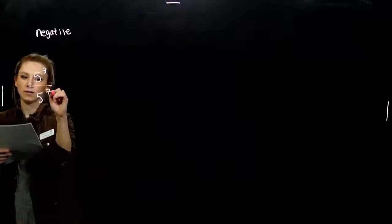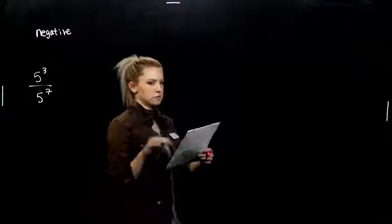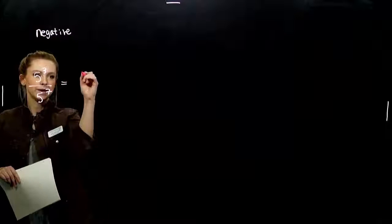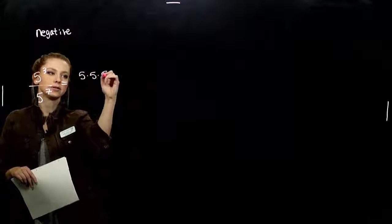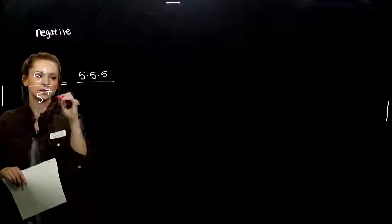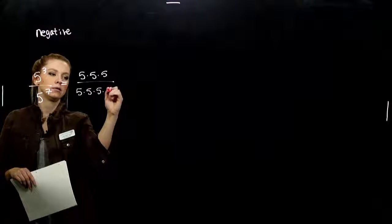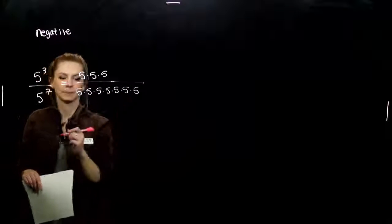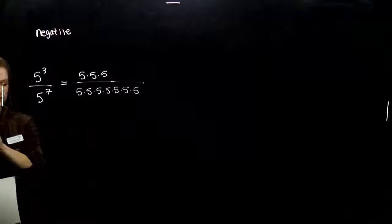So we're going to take that division quotient rule, 5 to the 3rd, 5 to the 7th, and look at this example. We want to write out all the terms and see what it equates to. So I've got three factors of 5 up top and 7 down below. 3, 4, 5, 6, 7.